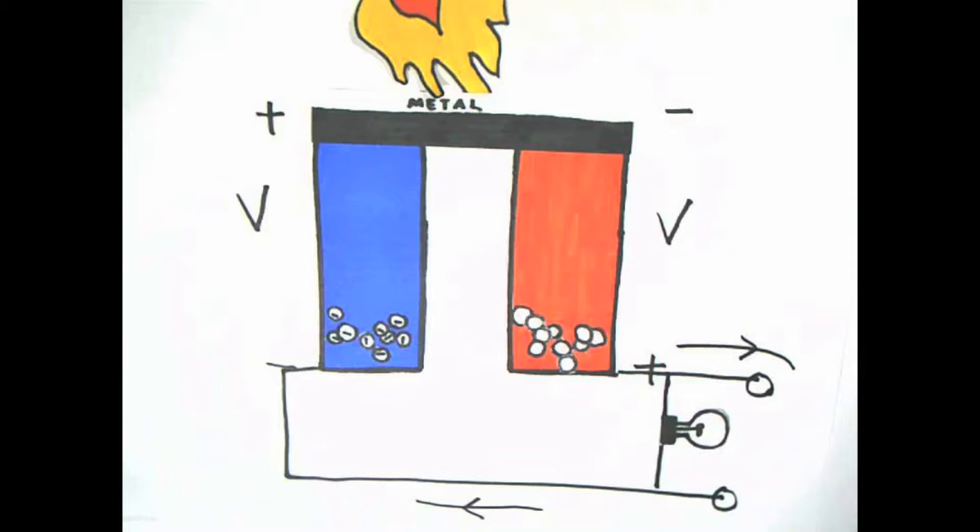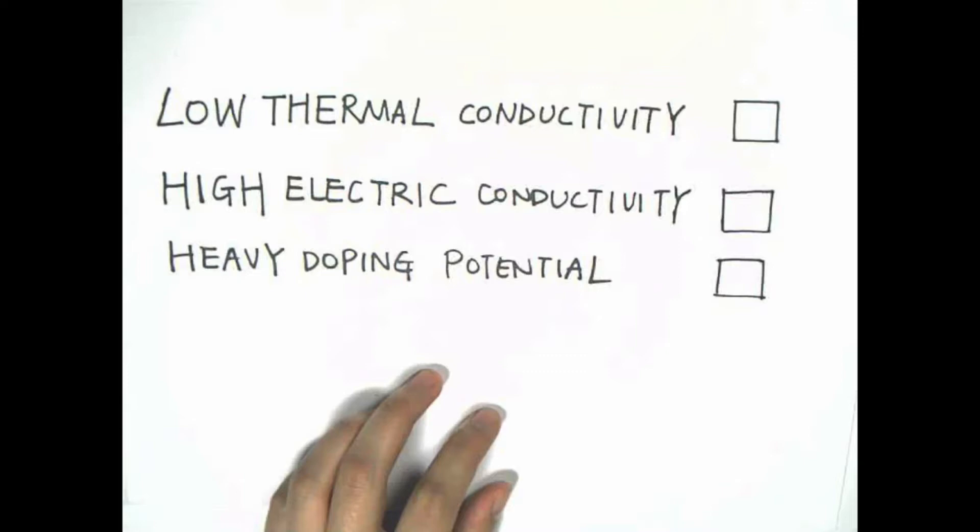Based on this simple model, we can discuss what types of materials would work best for thermoelectrics. We want the hot side to stay the hot side, and the cold side to stay the cold side. So we want a material with low thermal conductivity.